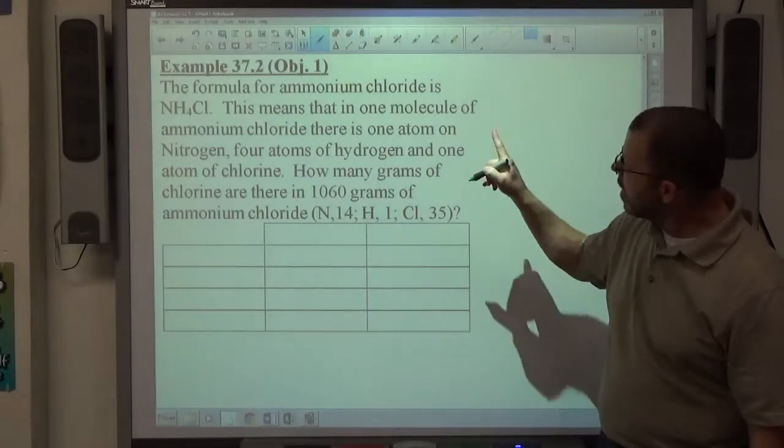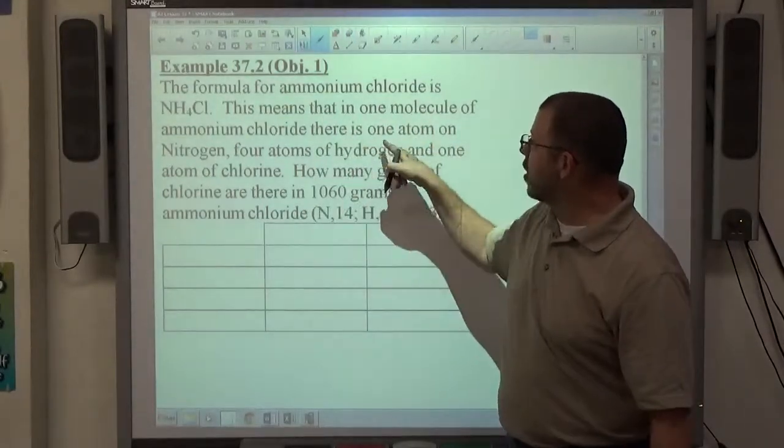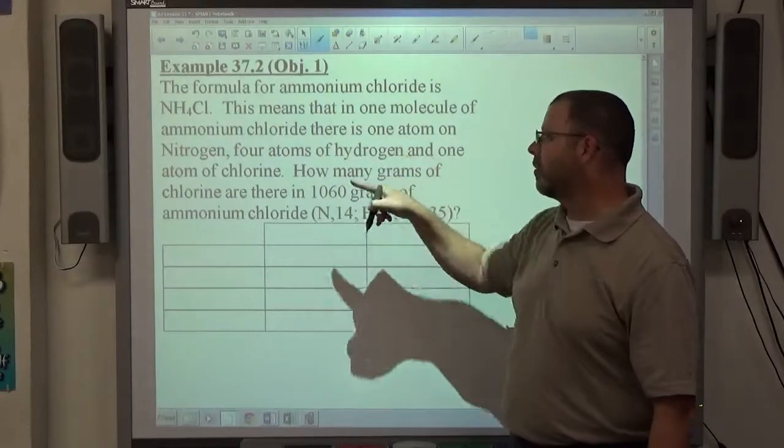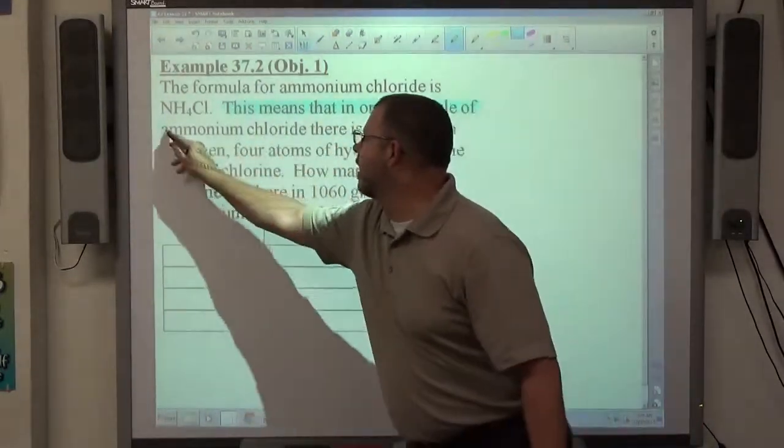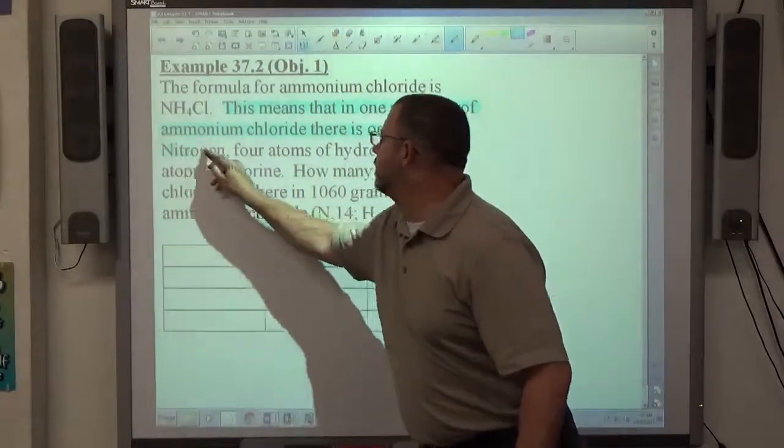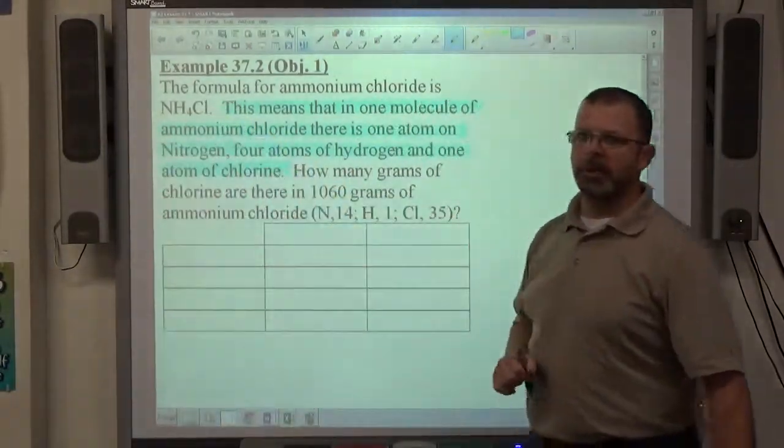So that means in one molecule of ammonium chloride, there's one atom of nitrogen, four atoms of hydrogen, and one atom of chlorine. So again, this sentence here is only there to specifically describe to you what that chemical formula means.